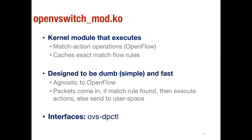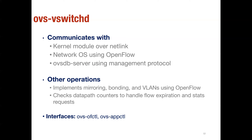ovs-vswitchd maintains three-direction communication. With the kernel module it uses a netlink interface — an interface for exchanging messages between processes in user space and the kernel. vswitch daemon runs in user space while the kernel module is in kernel space, so netlink is the standard interface between the two. For the network OS it uses OpenFlow — vswitch daemon interfaces with OpenFlow, not the kernel directly, and is responsible for pushing rules into the kernel.